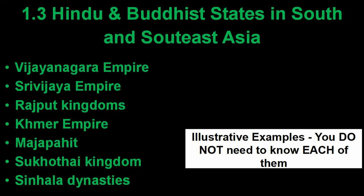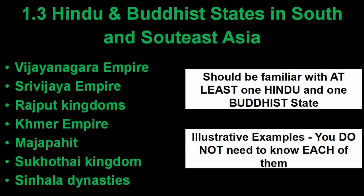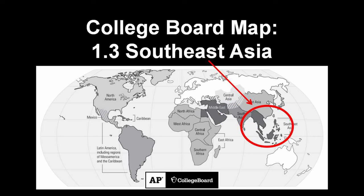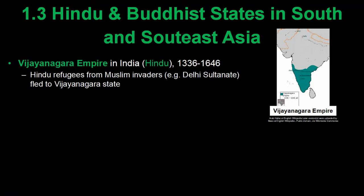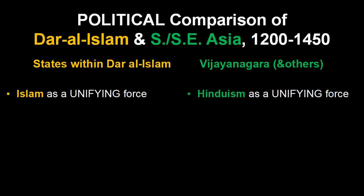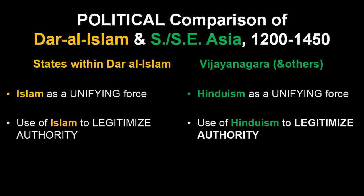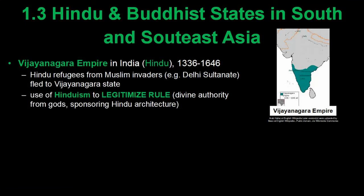1.3 South and Southeast Asia has a whole slew of states, but none of them are in the required content section. You should be familiar with at least a couple of them — at least one Buddhist state and one Hindu state. Vijayanagara is a go-to Hindu state because it's big, populous, and lasts a long time. Many Hindus who fled the Muslim armies in the north settled there. We can compare how Hinduism helped to unify the people in Vijayanagara in the same way that Islam helps to unify Muslim states. Most leaders of these states use either Hinduism or Buddhism to legitimize their rule, with rulers claiming divine authority from the Hindu pantheon.